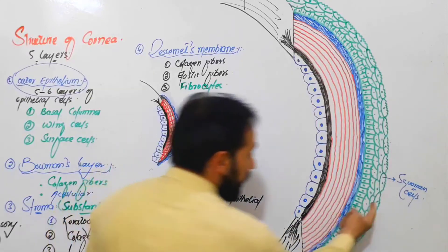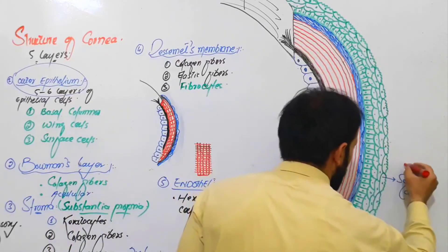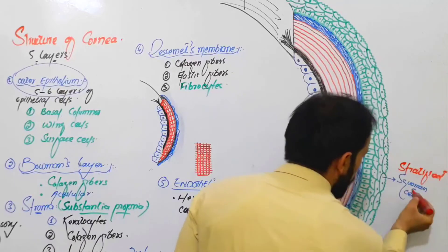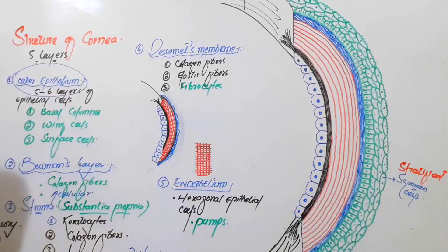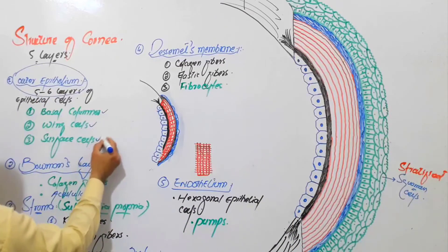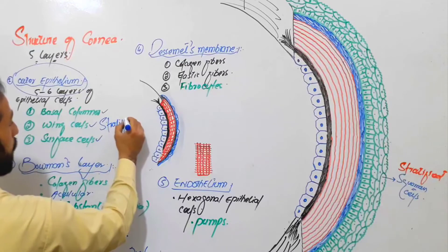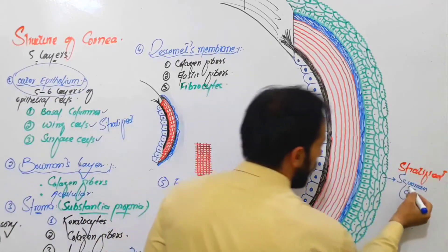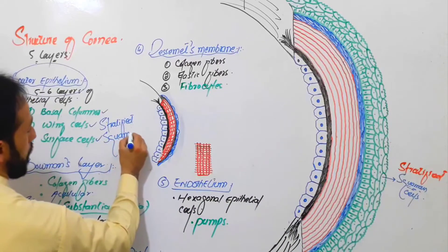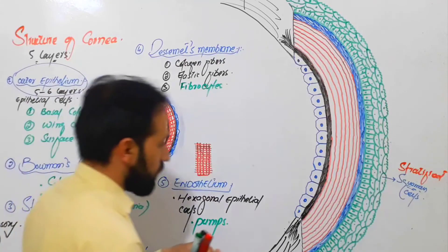There are many layers, so we say stratified squamous epithelial cells. There are basal cells, wing cells, and surface cells. It is made up of stratified layers and the outermost layer is the squamous layer. That is why we say stratified squamous epithelial cells.